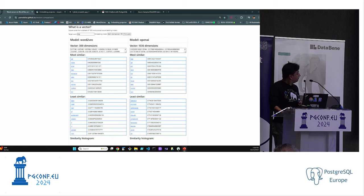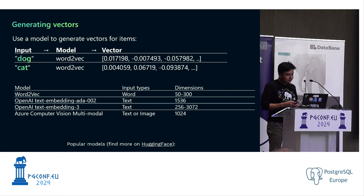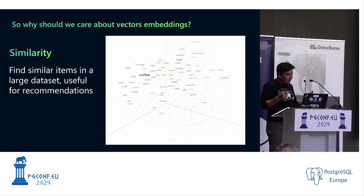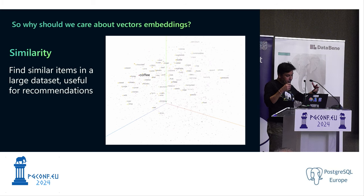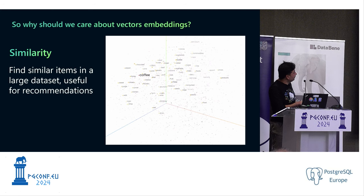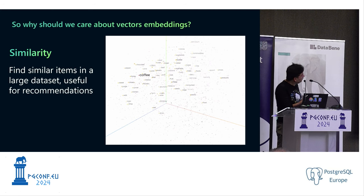Back to the presentation — comparing vector models. Why should we care about vectors and vector embeddings? Similarity and search are two different criteria. In a 3D model, if you search for 'coffee,' you can see the distance of coffee from other things — chocolates or honey are very close, whereas products or prices do not directly relate to coffee and are far away in the dimension.